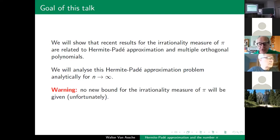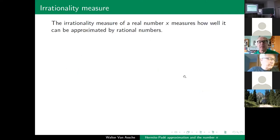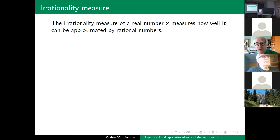Unfortunately, I will not give any new bounds for the irrationality measure of pi. The connection between Hermite-Padé approximation and number theory is really going back to the roots of Hermite-Padé approximation, because Hermite really invented Hermite-Padé approximation to prove that the number e is transcendental.